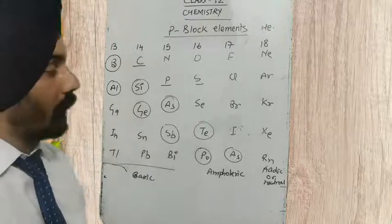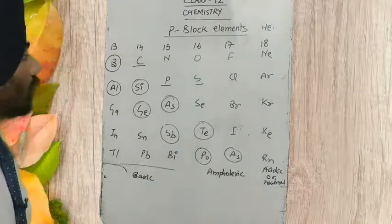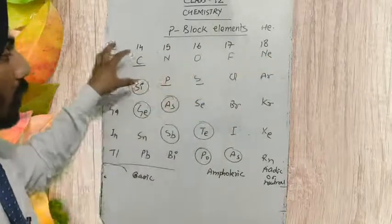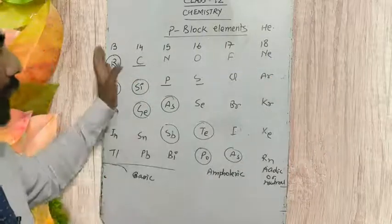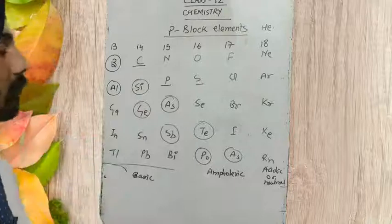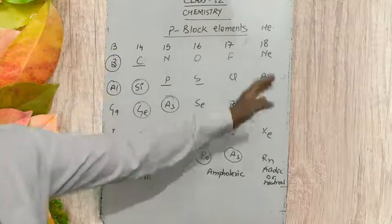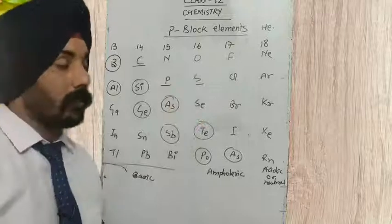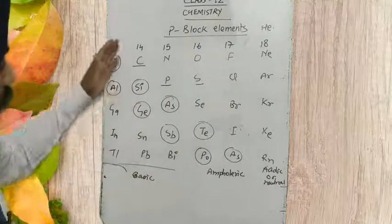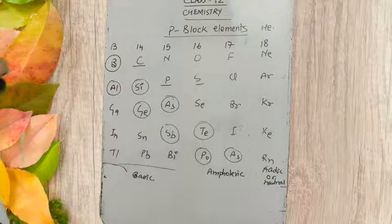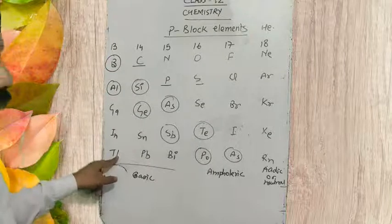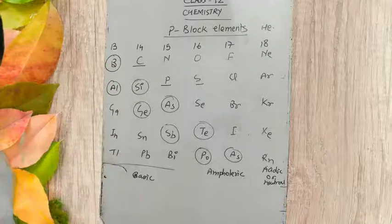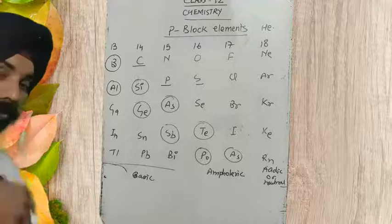Whether the oxides are acidic or basic — as we move from group 13 to 18, that is left to right in a period, the electropositive character of the elements is going to decrease and electronegative character is going to increase. So if we are moving from left to right in a period, electronegativity is increasing, so the acidic character of their oxides is going to increase.